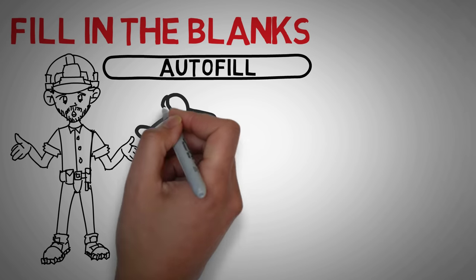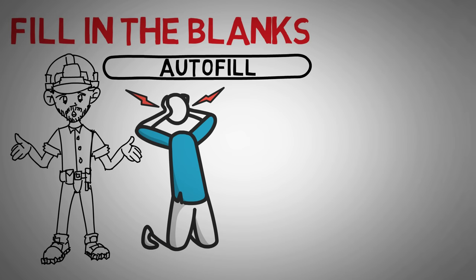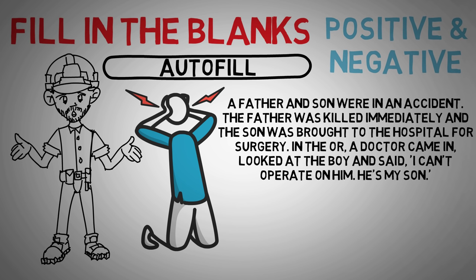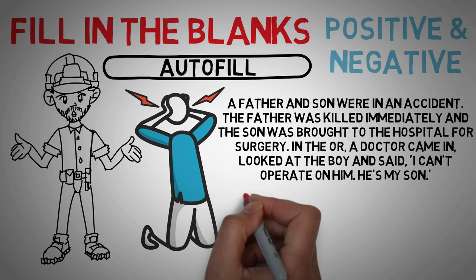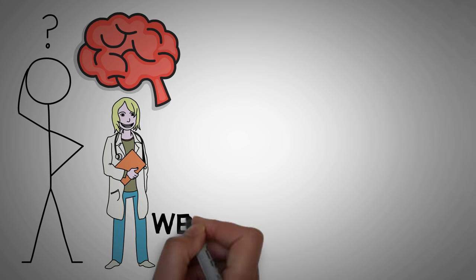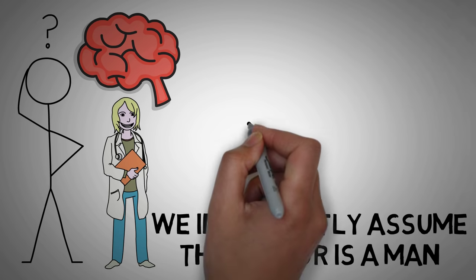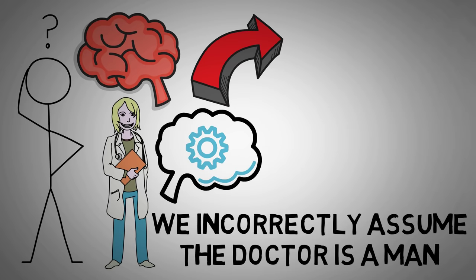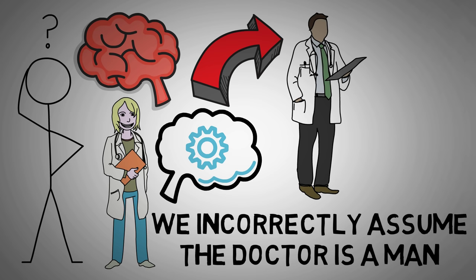This is both a positive and a negative trait of schema. Consider this riddle: a father and a son were in an accident. Very sadly, the father was killed immediately, and the son was brought to the hospital for surgery. In the operating room, a doctor came in, looked at the boy and said, 'I can't operate on him. He's my son.' Most people, if they've never heard this riddle before, cannot answer it correctly. It goes to show how deep biases are in our brains whenever we process information. The answer is that the doctor is the boy's mother. Due to your typical picture — or schema — of what a doctor or surgeon is, most people do not attribute the title to a woman or a mother. The picture of a doctor you have in your mind is actually the schema you have built for a doctor, and for most people, that picture is a man wearing a white lab coat and a stethoscope.